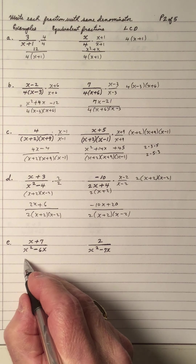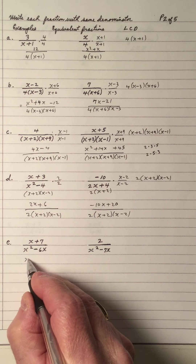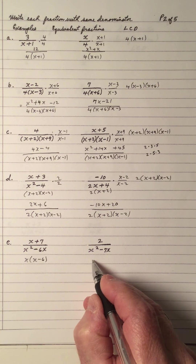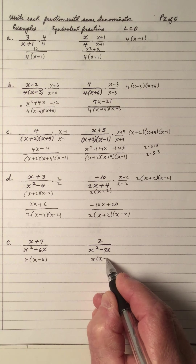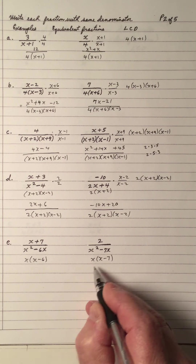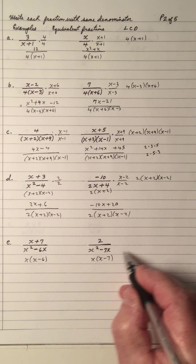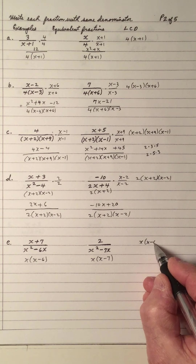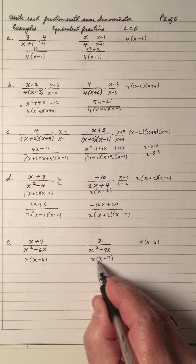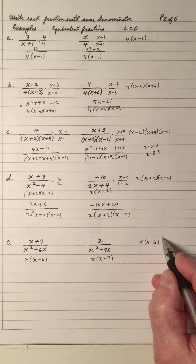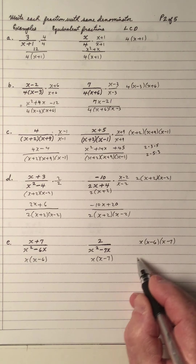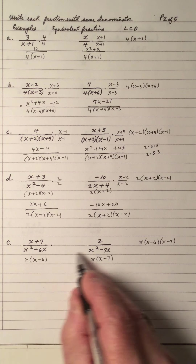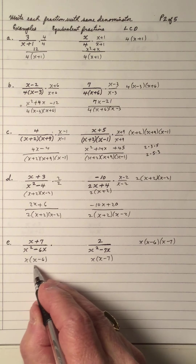Because you've got the same denominator, you add the numerators — the addition rule we did in the previous video. And number E, I have to factor. So x outside of x minus 6, and x outside of x minus 7. So the LCD — I have to have an x and an x minus 6. The x is already there; I need an x minus 7.